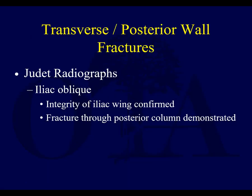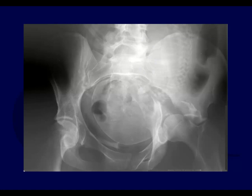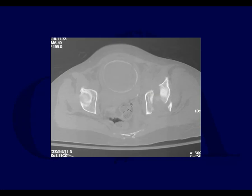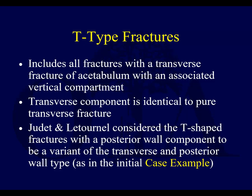The iliac oblique x-ray shows the integrity of the iliac wing and allows you to see the posterior column. Here you can see the posterior column displacement with the head displaced medially. The CT scan confirms the transverse posterior wall fracture.